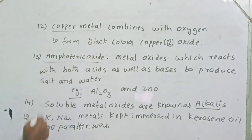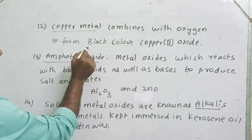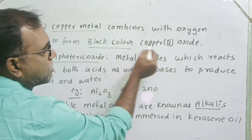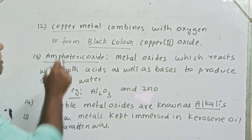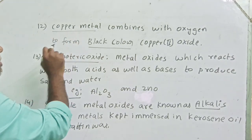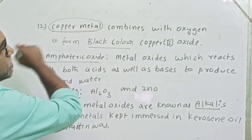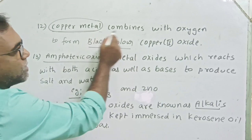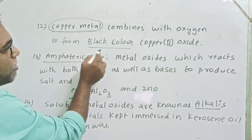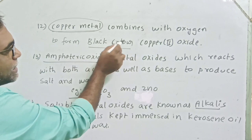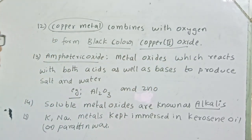Copper metal is a reddish brown colour metal. It combines with oxygen and forms a black colour substance known as copper oxide.